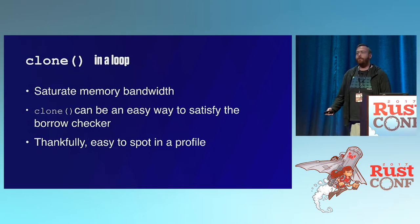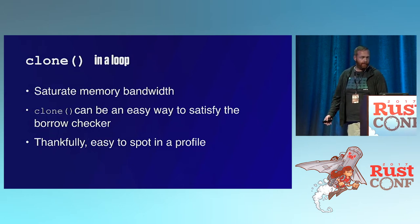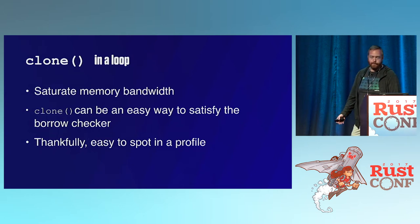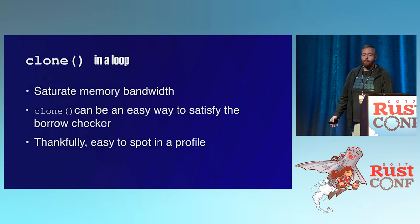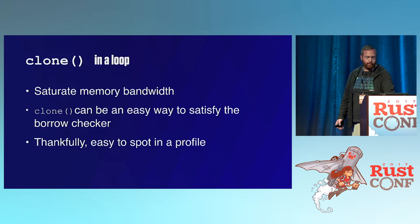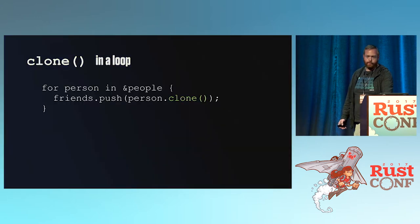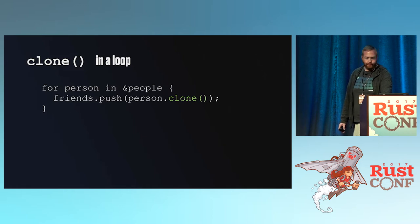Doing clone in a loop is something that can kill performance by saturating your DRAM bandwidth. The nice thing about clone is it's explicit — you'll see it in a profile at the very top. Here's a contrived example of going through a people vector and pushing them into another friends vector.